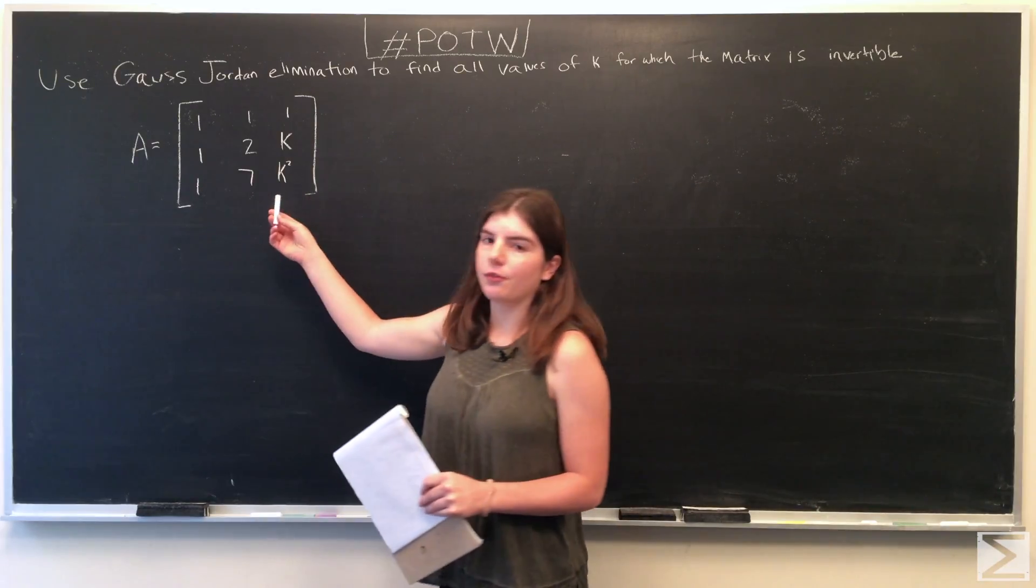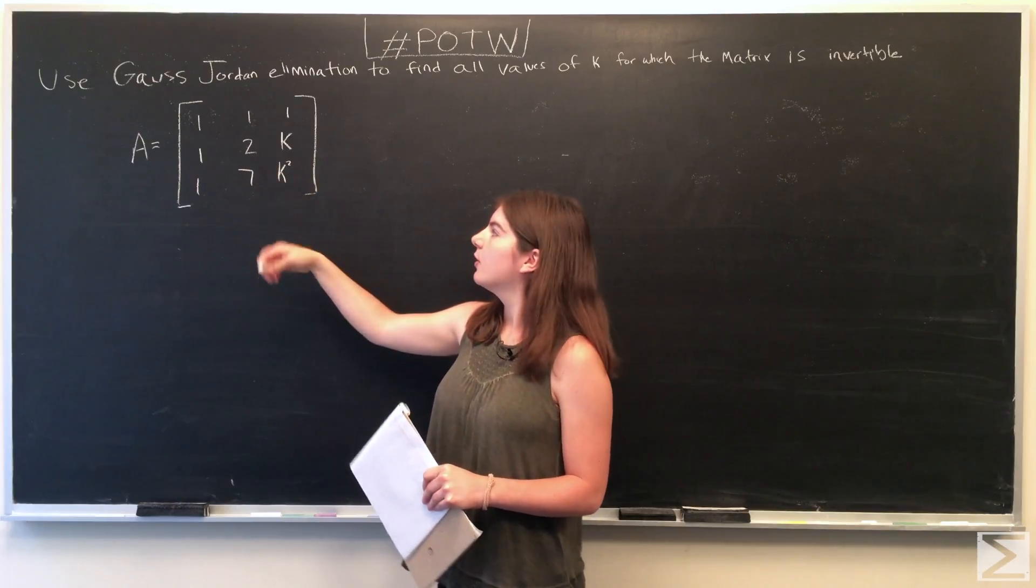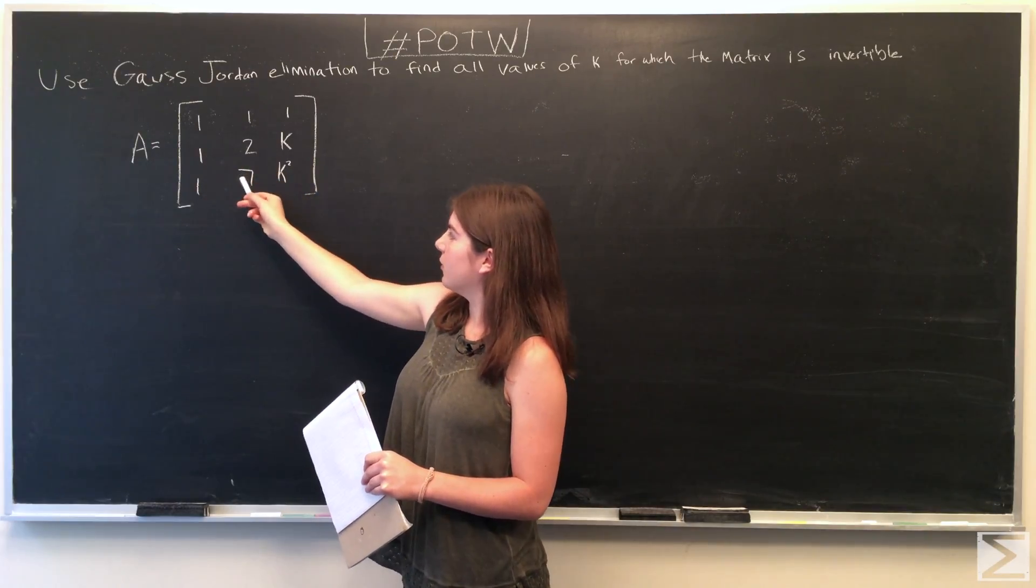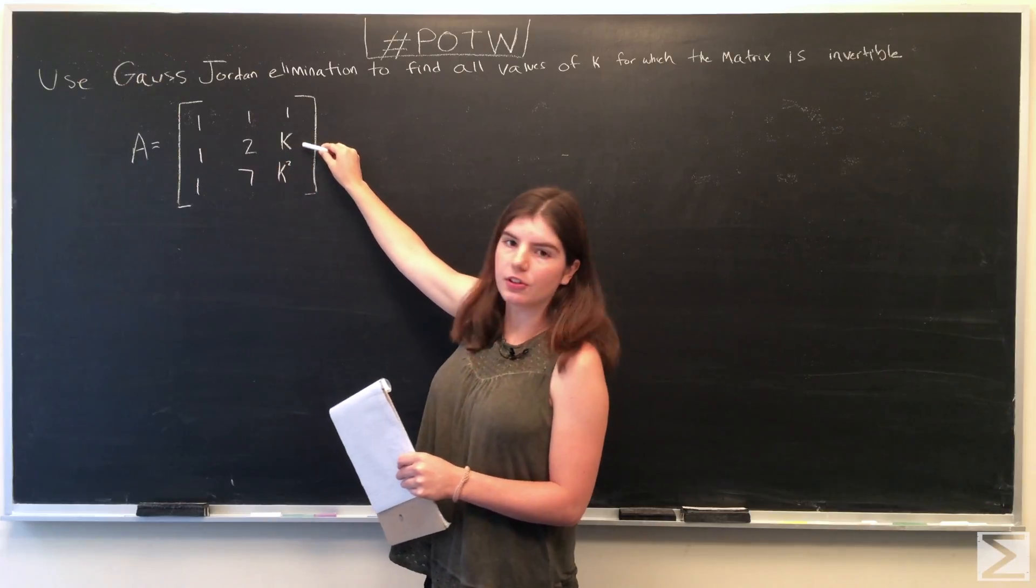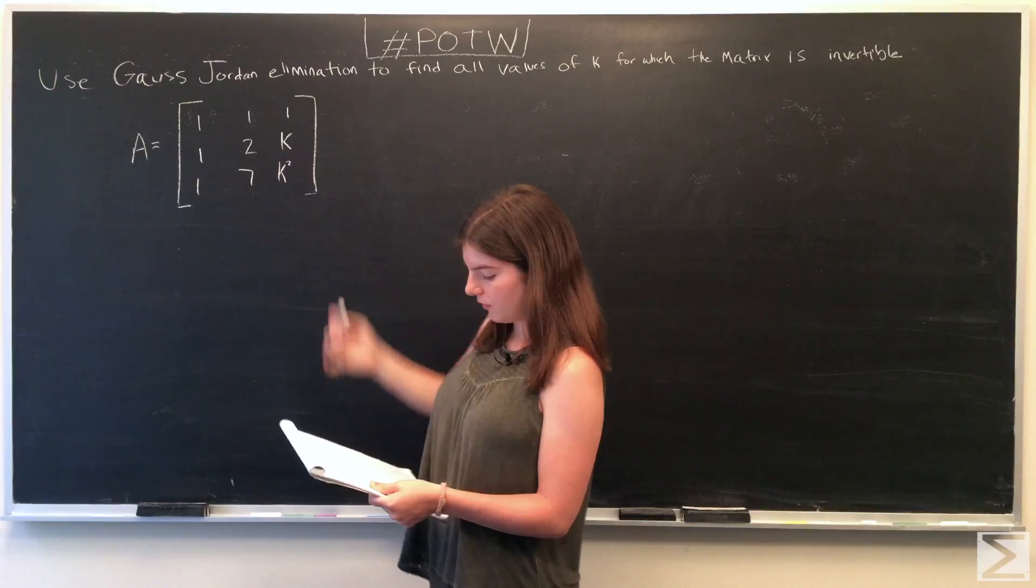In upper triangular form, we want all the entries below the main diagonal to be equal to zero. So we want these values to be equal to zero. So we're going to reduce the second row first.